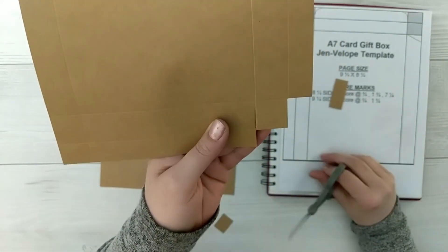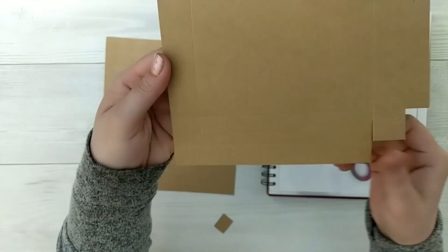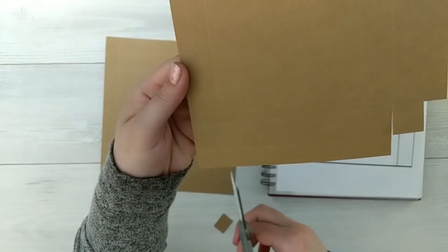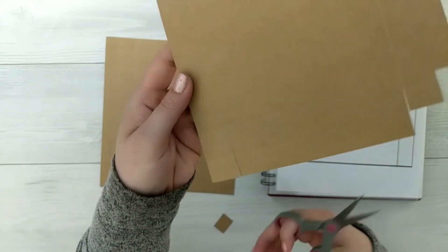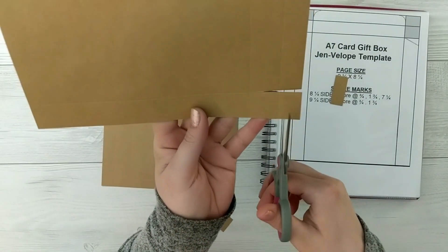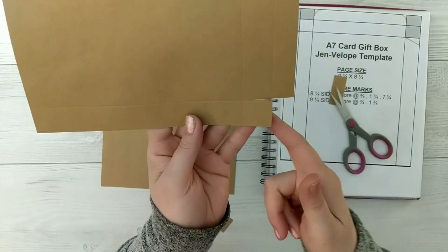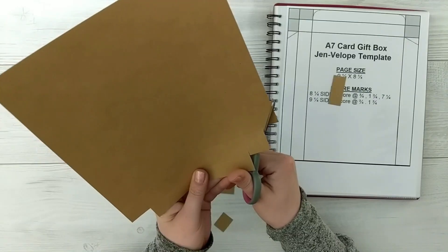So on this part here you're going to cut off that little flap, but you're going to cut all the way down to the second score mark and then just cut off that little top piece. And now we've got two flaps, one on each side.